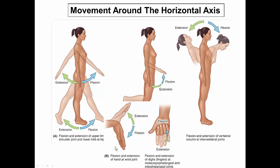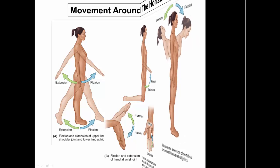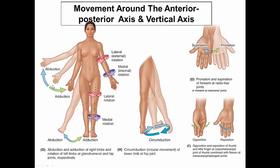Abduction of the arm is moving it away from the body along a horizontal axis. Adduction — as if you are adding something — brings the arm back to the body in the anatomical position. The same applies to the lower limb: abduction moves it away from the midline, and adduction moves it back toward the midline. You can also rotate both the upper and lower limb externally or laterally, or internally or medially.